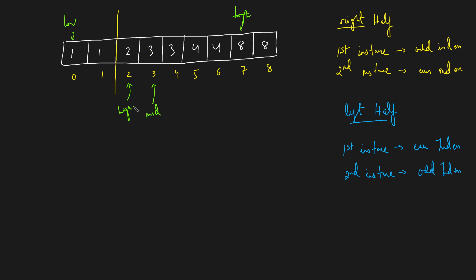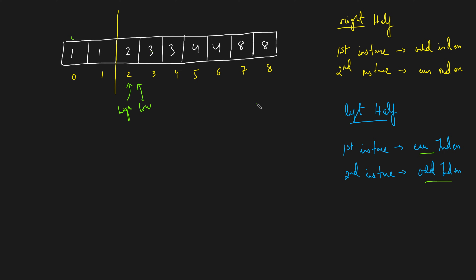Now low is at zero and high is at two. The new middle points to index one — an odd index. Since it's odd, it's a second instance, so check if the first instance is on the left. Yes, there is a one on the left, so you're on the left half. To find the breakpoint, shrink the left half by moving low to mid plus one, so low moves to index two. The new middle also points to index two — an even index.